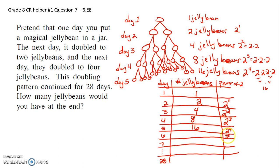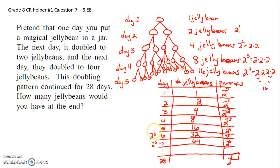So on day six, it's two to the fifth power jelly beans, and two to the fifth is thirty-two. On day seven, it would be two to the sixth power — there would be sixty-four jelly beans. If you check two to the zero on your calculator you'll get one, following this pattern. So day six is two to the fifth, day seven is two to the sixth, day five was two to the fourth, day four was two to the third, and so on.